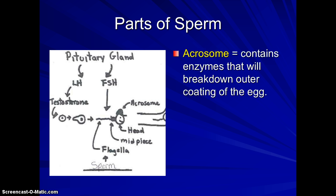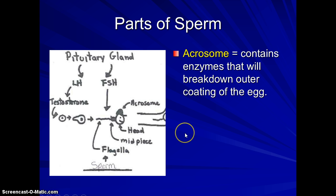Now let's talk about parts of the sperm. We have what's called the acrosome, which sits over the head of the sperm — I have a cartoon drawing showing it as a hat. It contains enzymes that will break down the outer coating of the egg, the oocyte. When the oocyte is released, there are cells around it that need to be broken down in order for fertilization to occur.